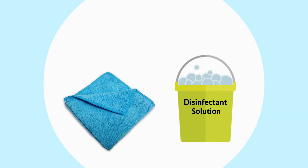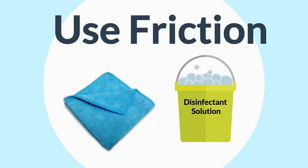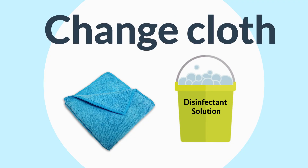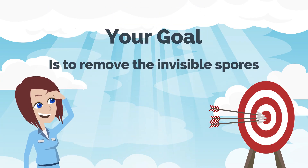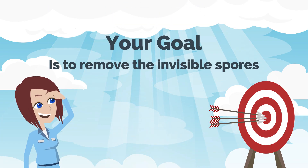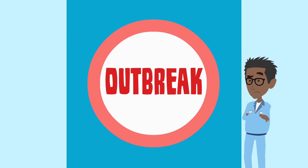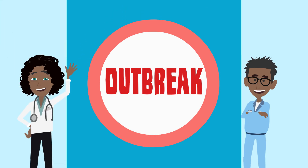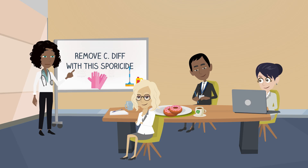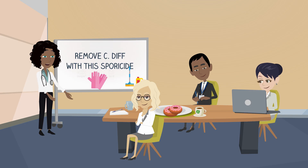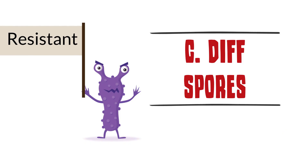The folded cleaning cloths should be dampened with the appropriate disinfectant solution. Use friction and change the cloths as frequently as needed in order to prevent cross-contamination. Your goal is to remove as many of the invisible spores as possible through mechanical cleaning. Continuing to use your standard facility-approved disinfectant cleaner may be appropriate, unless the facility is experiencing an outbreak of C. diff, or if it has been requested by your infection preventionist. When there is a concern that the physical cleaning aspect is not removing sufficient C. diff spores, the facility's infection preventionist may recommend the use of a special sporicidal disinfectant cleaning product. This is because C. diff spores are resistant to most hospital disinfectants.